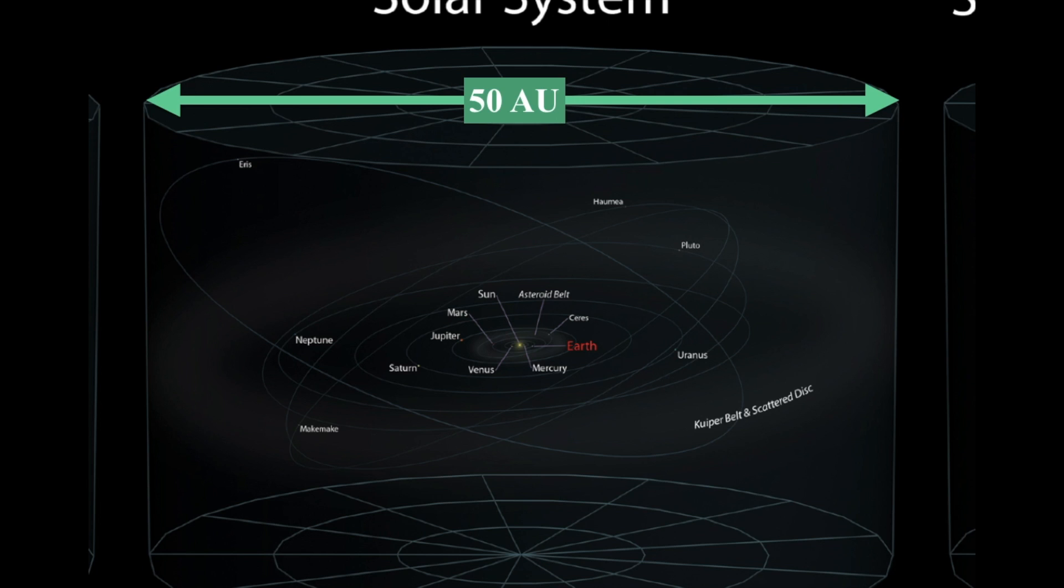But there are lots of other objects that orbit the sun other than Mercury, Venus, Earth, Mars, Jupiter, Saturn, Uranus, Neptune and Pluto. There's a number of dwarf planets and zillions of asteroids and comets and things. And the rough size of our solar system diameter is about 50 times the distance between the Earth and the sun or 50 astronomical units.